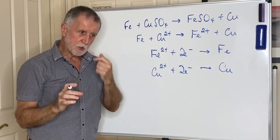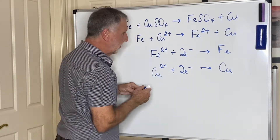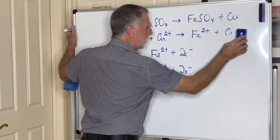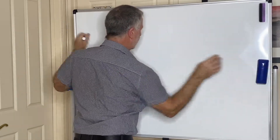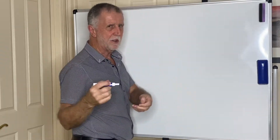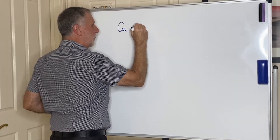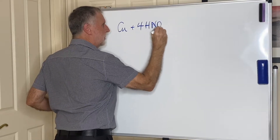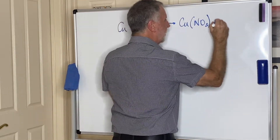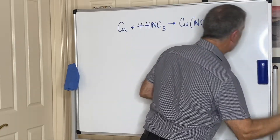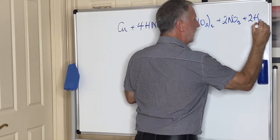In the external exam last year, the first external exam, they asked a question which gave you an overall reaction. I'll show you the question because it's important to understand how you might be examined on this. The reaction given was between copper and nitric acid, and this is the balanced equation for that reaction: Cu + 4HNO3 → Cu(NO3)2 + 2NO2 + 2H2O.